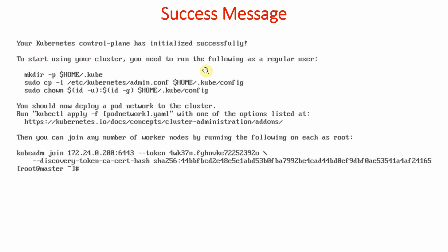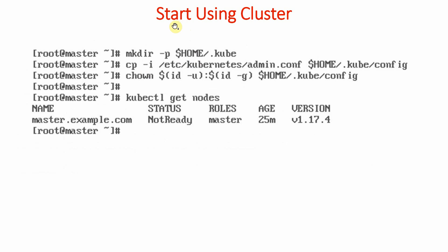Following the post-init instructions, run 'mkdir -p $HOME/.kube' to create the hidden .kube directory, then copy the admin config file with 'cp /etc/kubernetes/admin.conf $HOME/.kube/config', and change ownership with 'chown $(id -u):$(id -g) $HOME/.kube/config'. The large 'kubeadm join' command saved in the token file must then be run on worker systems. We make the directories and copy files as instructed — these are the three commands to run.